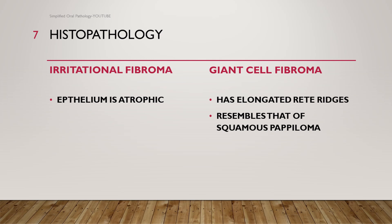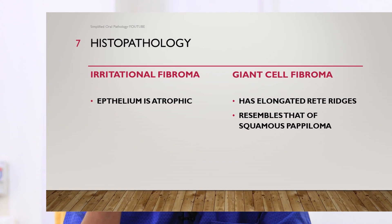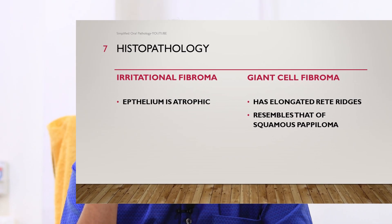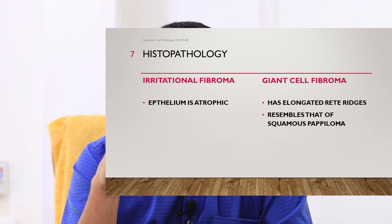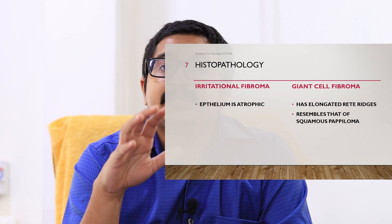When we discuss the histopathology of giant cell fibroma, we will start with the epithelium. As discussed in the clinical features, giant cell fibroma has a papillary appearance that is reflected in the histopathology as well. The epithelium in giant cell fibroma is not atrophic; rather, it shows elongated rete ridges. In contrast, in fibroma the epithelium was atrophic.